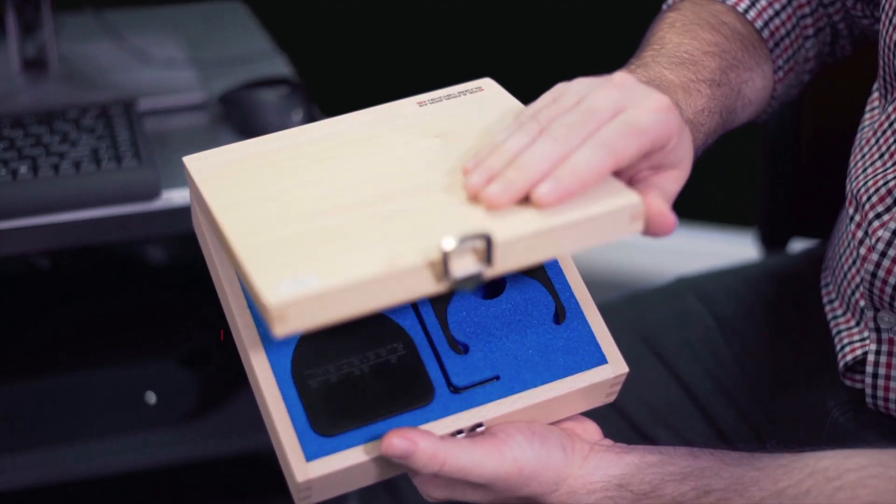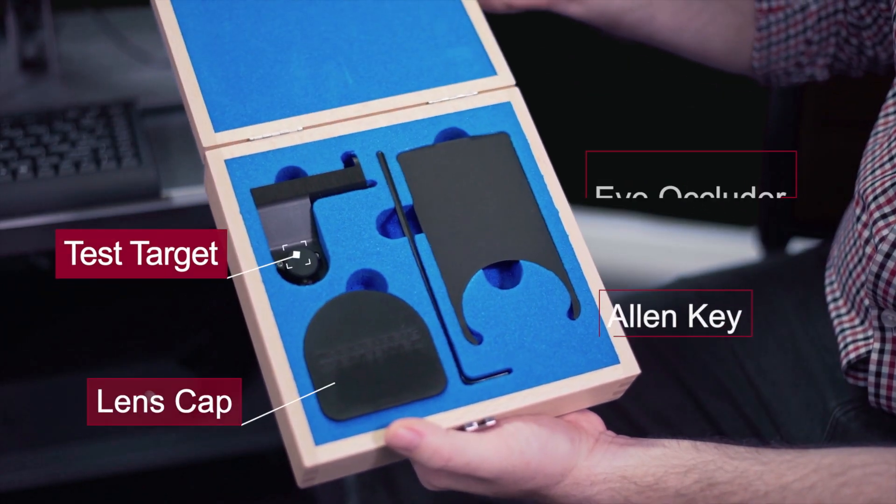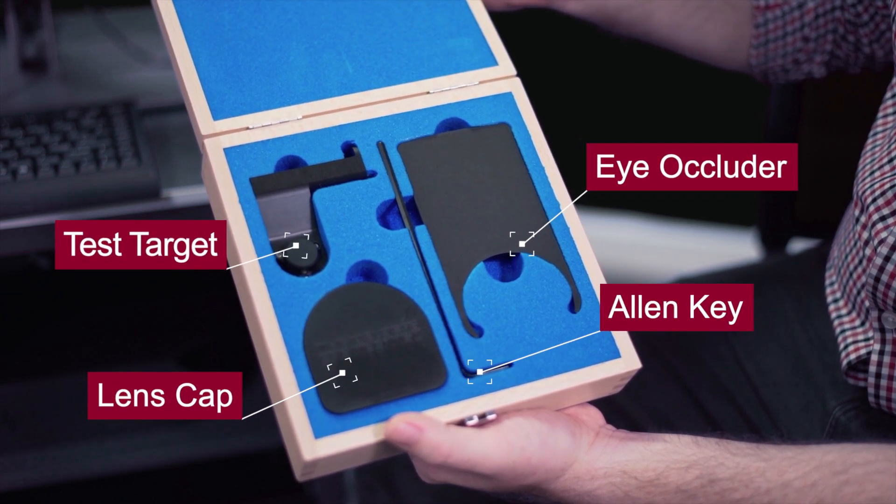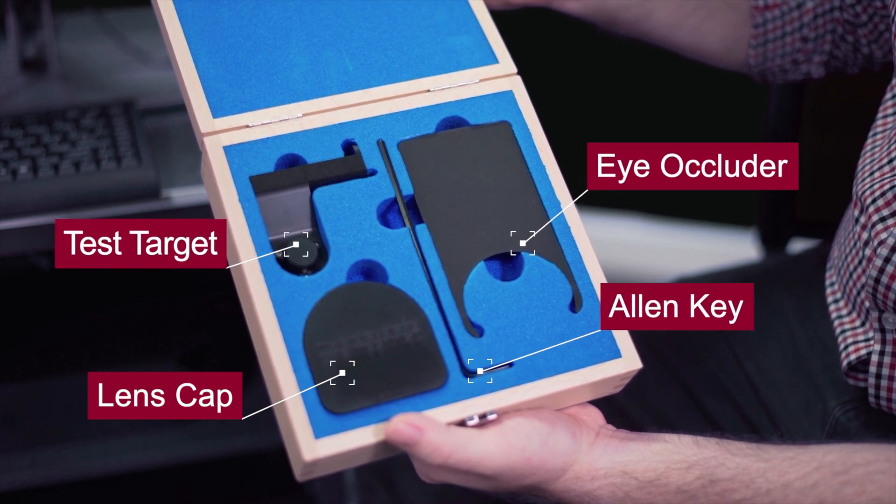Each device comes with an accessories box which contains the test target, the eye occluder, the lens cap, and the allen key.